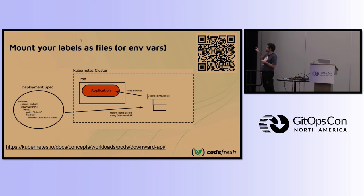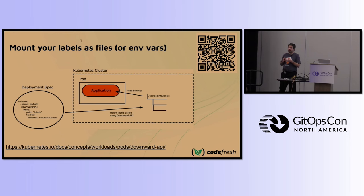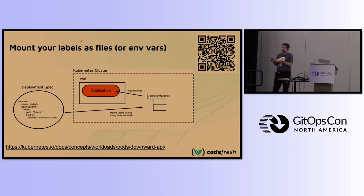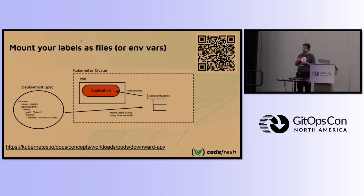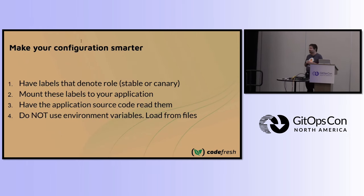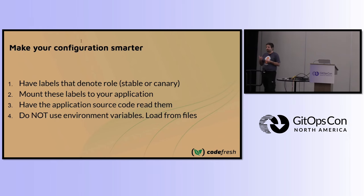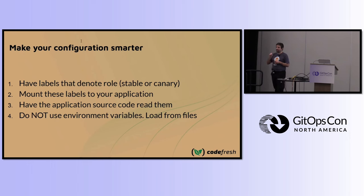Here's an example: there are some labels on the deployment, and I choose to mount all these labels to `/etc/pod-info/labels`. The application can then read the information from the labels — it doesn't need to know anything about labels or even about Kubernetes. As far as the application is concerned, it just reads files. The Downward API also has an option to use environment variables, but for reasons that will become apparent, files are the recommended way.